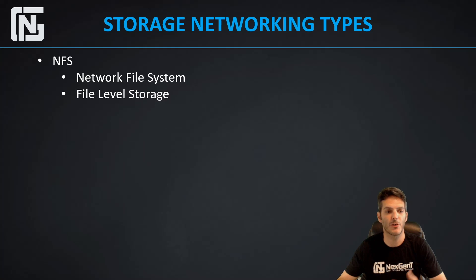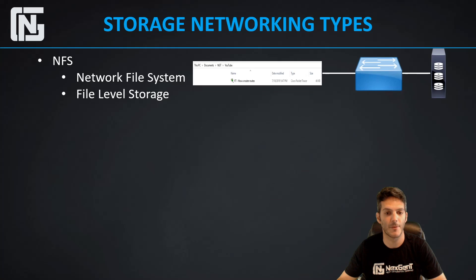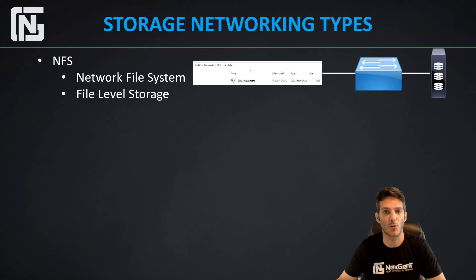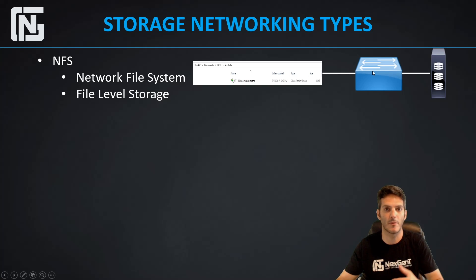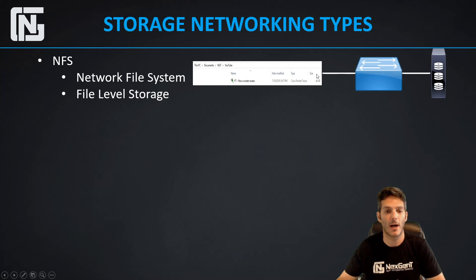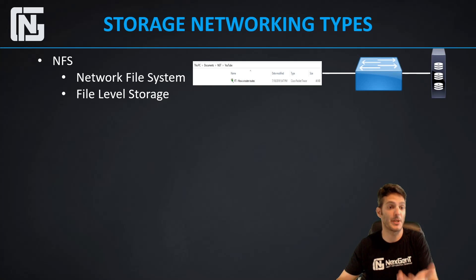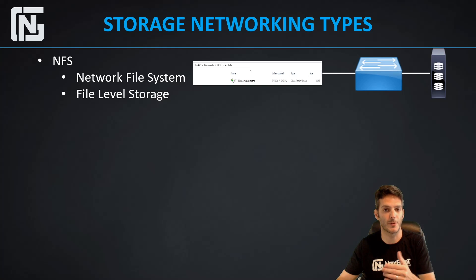When we talk about the different storage networking types, NFS — Network File System — is file level storage. I've taken a screenshot of Windows Explorer with a switch and a disk array on the far right. That disk array is where the file is actually sitting. Via the network, typically through Samba or SMB — the Server Message Block protocol — you're going to rely on SMB to translate the data between the JBOD and your computer. It's a file level access, so it's no different than if you had a file local to your PC.